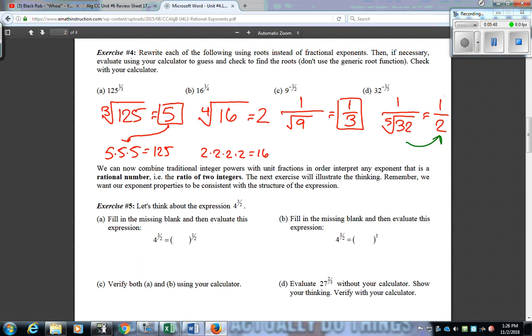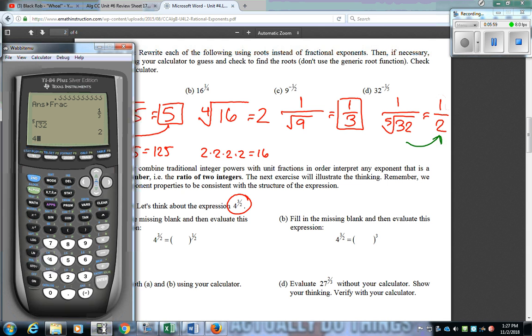Moving on to exercise 5. They're giving us an exponent of 4 to the 3 halves power. I'm going to toss that into the calculator right now. So I got 4, I'm going to use the exponent key, and I'm going to do the fraction 3 over 2, which is going to give me an answer of 8. So this answer is 8.